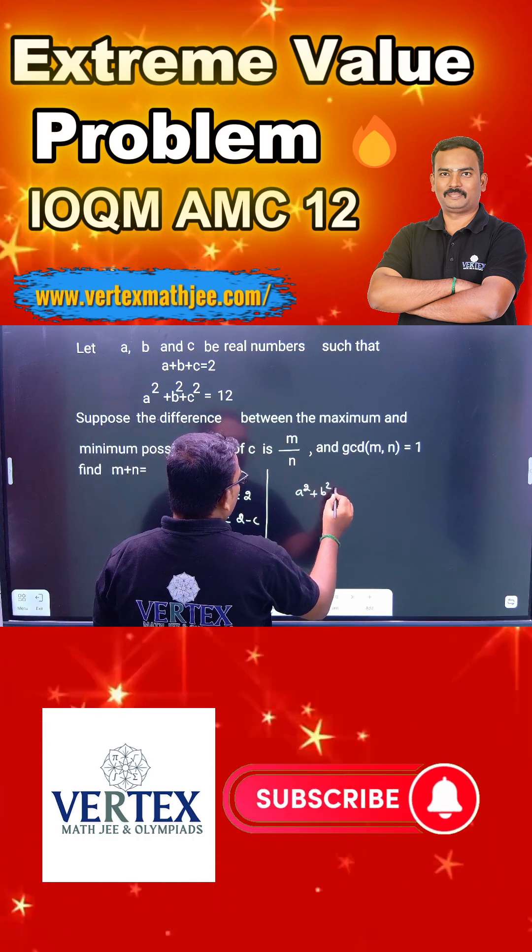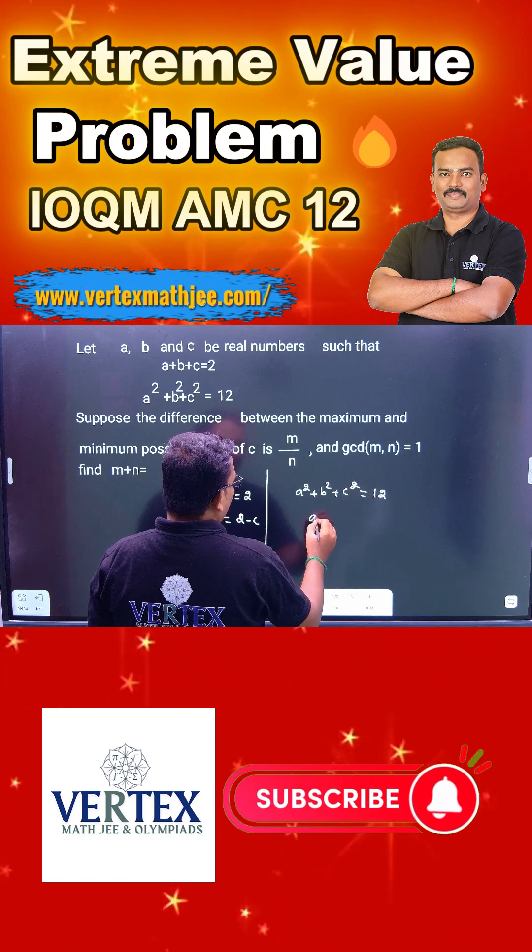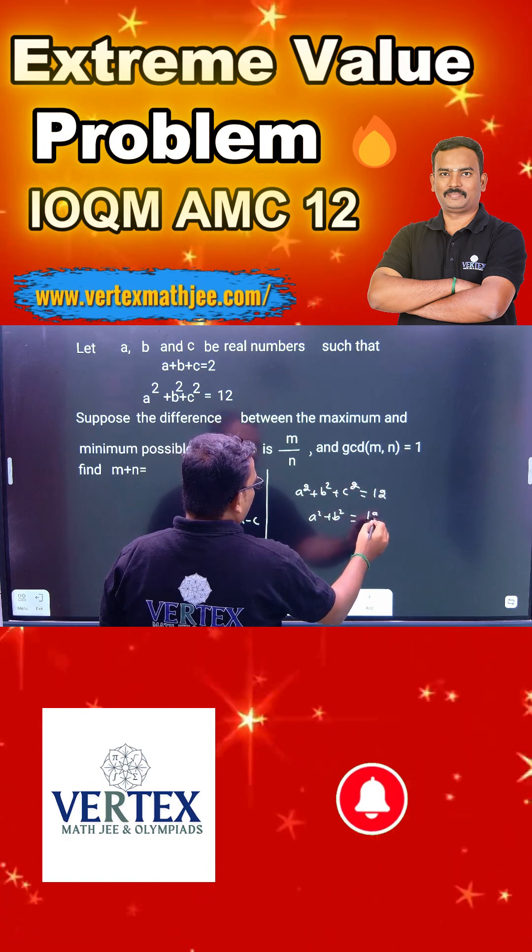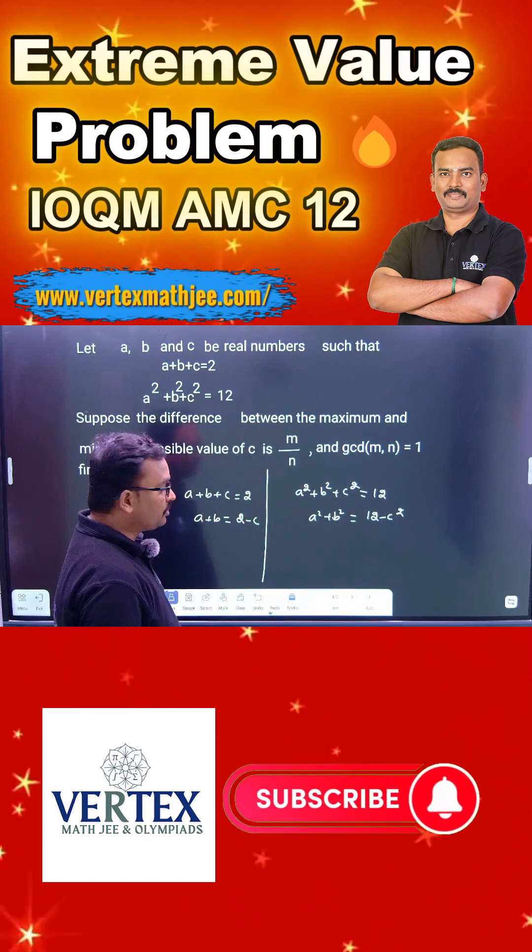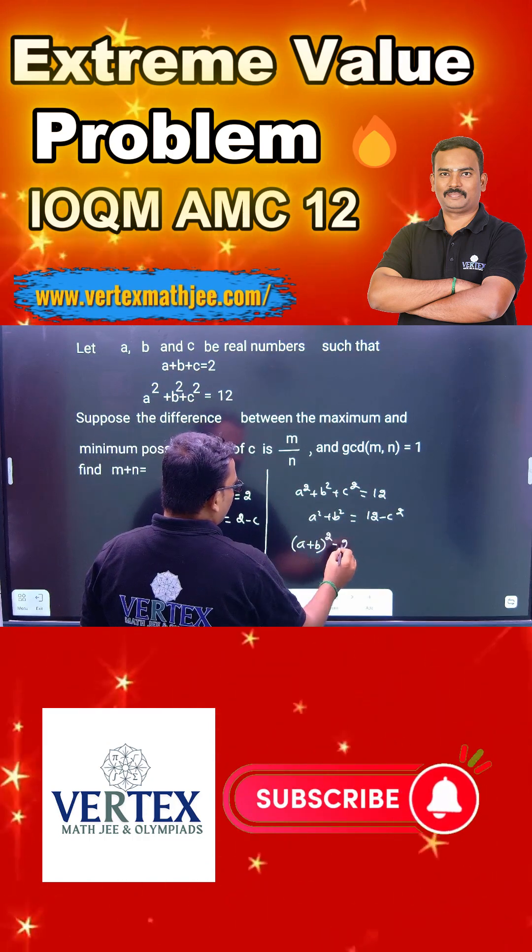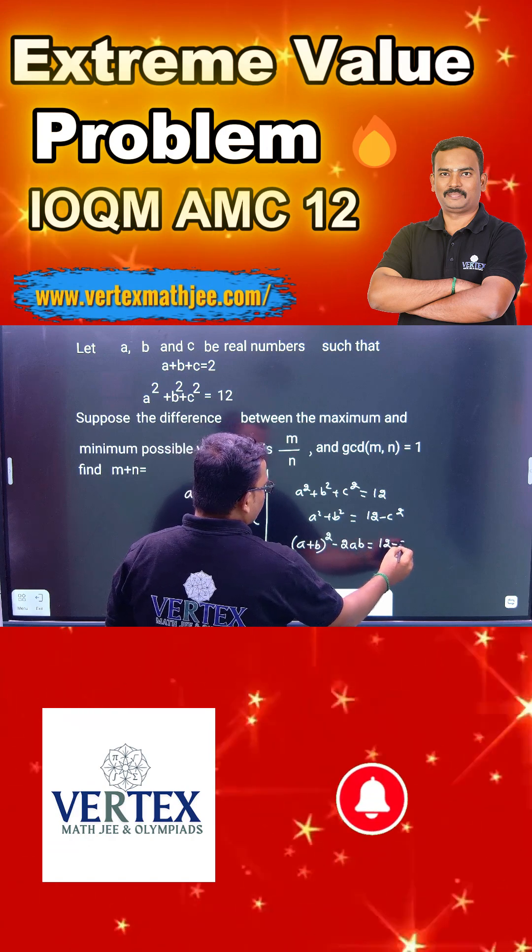Then a squared plus b squared plus c squared equals 12. Then a squared plus b squared, how to write? 12 minus c squared. But you know that a plus b is in terms of c. So how to write a squared plus b squared? a plus b whole squared minus 2ab equals 12 minus c squared.